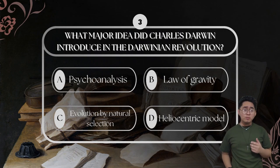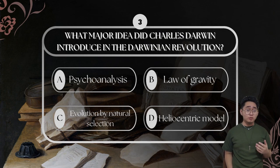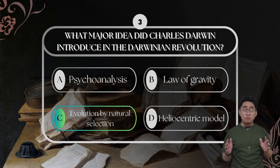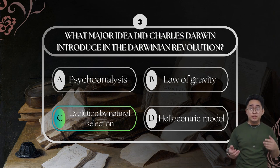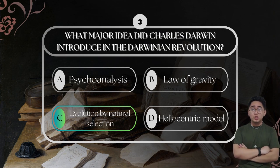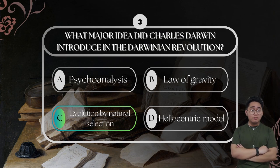For question number three: what major idea did Charles Darwin introduce in the Darwinian Revolution? The correct answer is evolution by natural selection. Charles Darwin introduced the concept of evolution through natural selection, which explained how species adapt and survive over time. His theory was revolutionary because it provided a scientific explanation for the diversity of life and challenged traditional beliefs about creation and human origins.